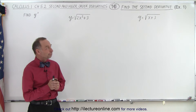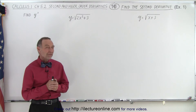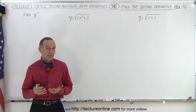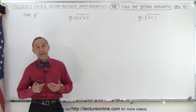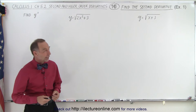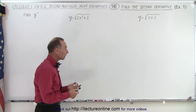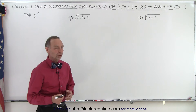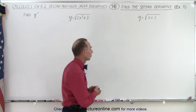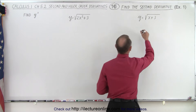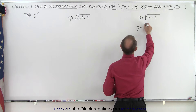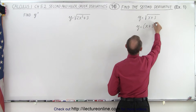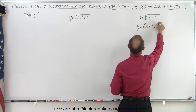Welcome to Electronline. Let's find the second derivative of a few functions that involve radicals. Whenever you get a radical, I recommend that you change it to exponential form first. So we're going to rewrite it as y equals the quantity x plus 3 to the 1 half power.